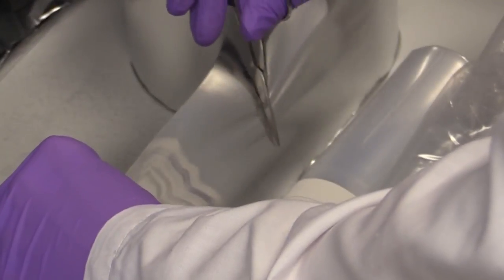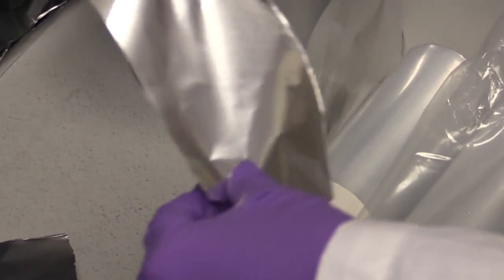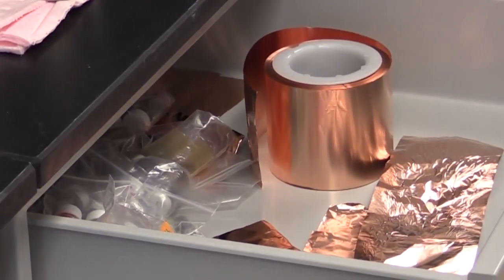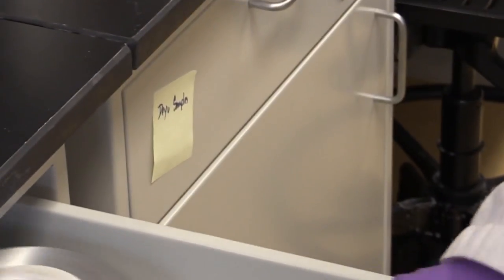Since we're casting a cathode material, we'll be using aluminum foil. This is battery-grade aluminum foil. If we were casting an anode, we would be using copper foil, which would be this one. But we're doing lithium cobalt oxide, so we should be using aluminum.